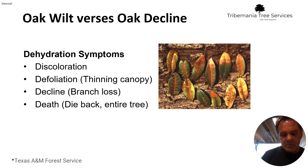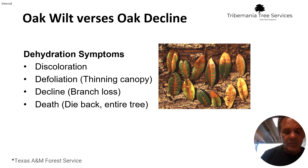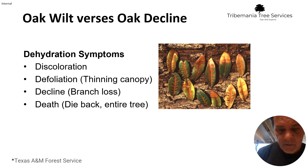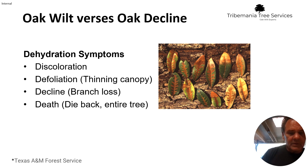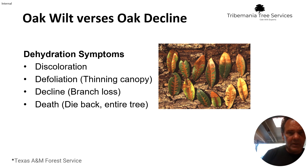There are some specific markings that sometimes can be in a leaf if it's oak wilt, and I'll talk more about that when we get to that topic in another segment. But then defoliation — and this is progressive, these symptoms are a progression — defoliation is just a thinning out of the canopy.